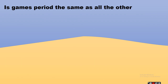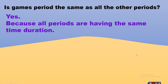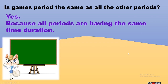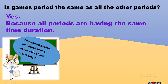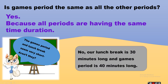Is the games period the same as all the other periods? Yes, because all periods have the same time duration of 40 minutes. And the second question — the games period and lunch break seem very short, aren't they? No — our lunch break is 30 minutes long and our games period is 40 minutes long.